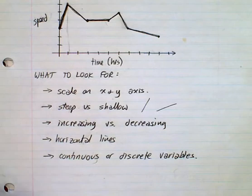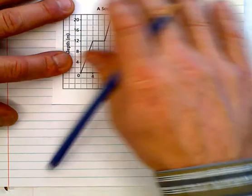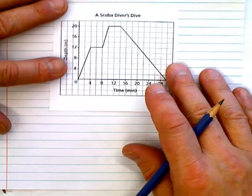And then the last thing would be to look for the continuous or discrete variables. That means, do you connect the dots or do you not connect the dots? Are there values that exist in between or are there not values that exist in between? So, what we're going to look at are some simple graphs here and see if you can interpret this thing. So, a scuba diver's dive,